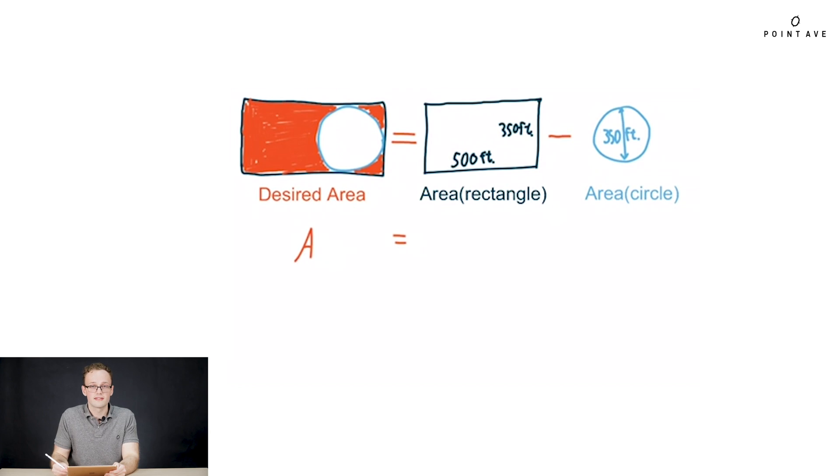So first, the area of the rectangle. The area of any rectangle is length times width. So we plug in numbers and get 500 times 350. Next, the area of the circle, pi r squared. But what is the radius? Well, we're given diameter is 350, so the radius is half that, 350 over 2. Now simply evaluating numbers, we get to our final answer, an area of 78,789.